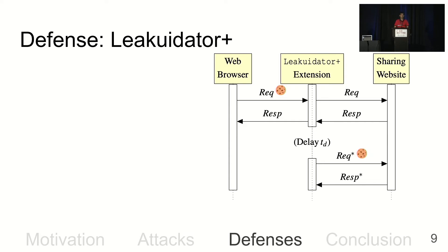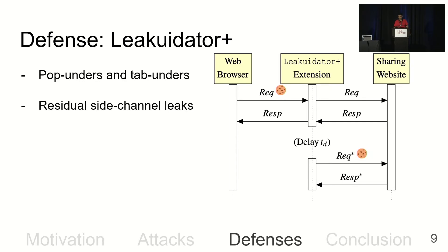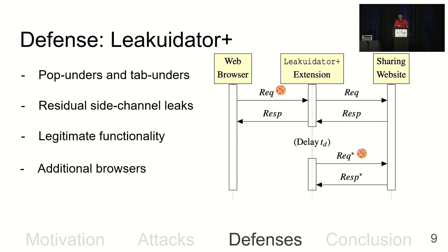Here are some challenges encountered when developing this solution. Pop-unders and tab-unders were new variants of the attack, so we extended the defense to protect against these methods. The defense keeps track of relations between tabs and windows to check which one was opened by which other. We also noticed residual side channels remained — for example, the response time for the second request differs depending on cookies — so we added a small random delay to resolve this. We also added support for Firefox and Tor, as the initial version only supported Chromium-based browsers.